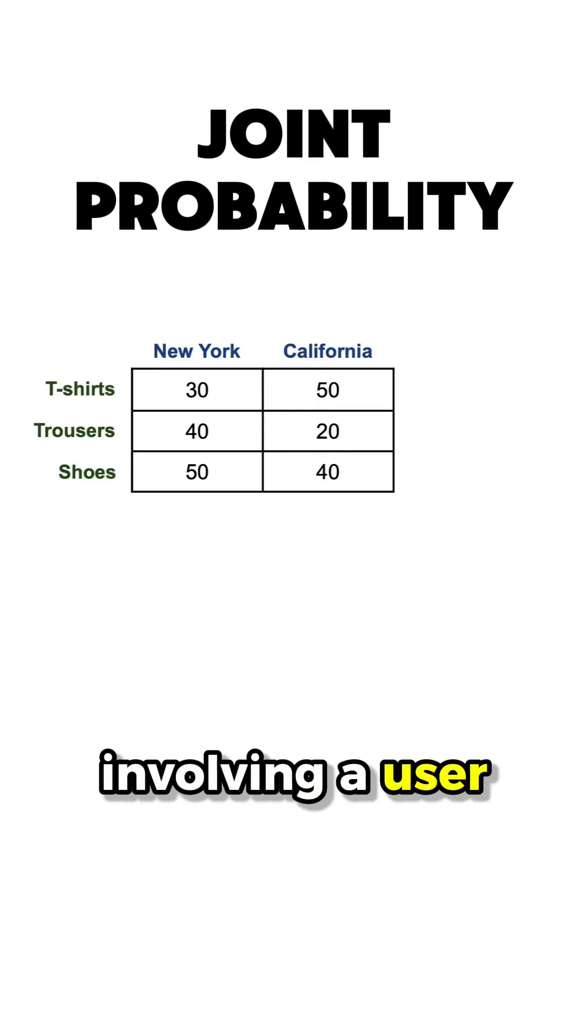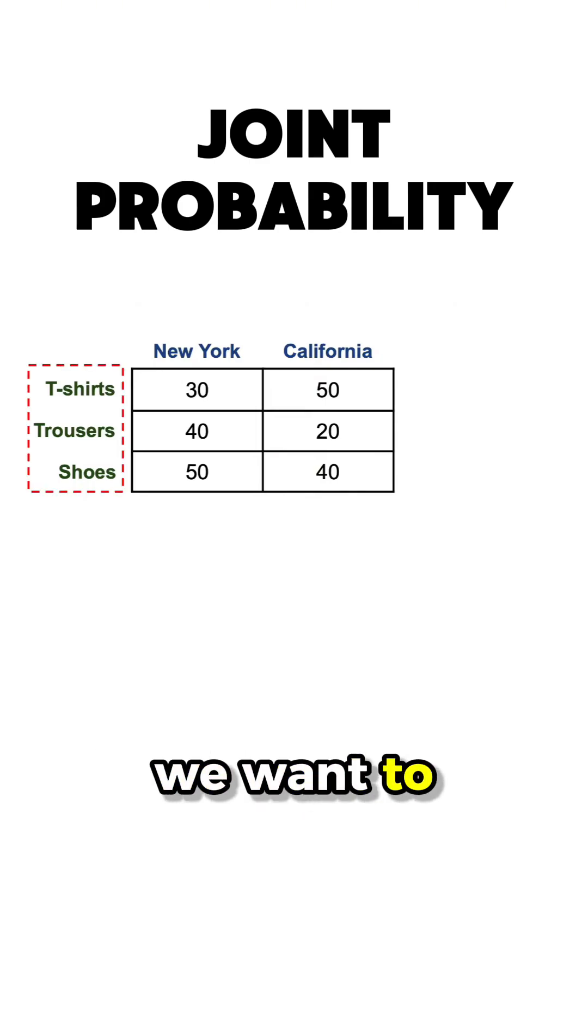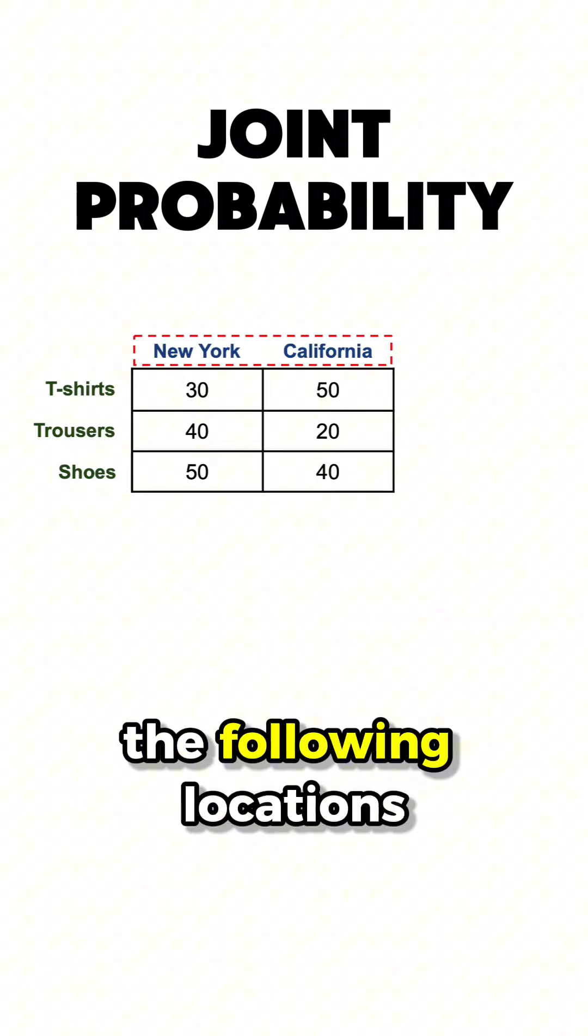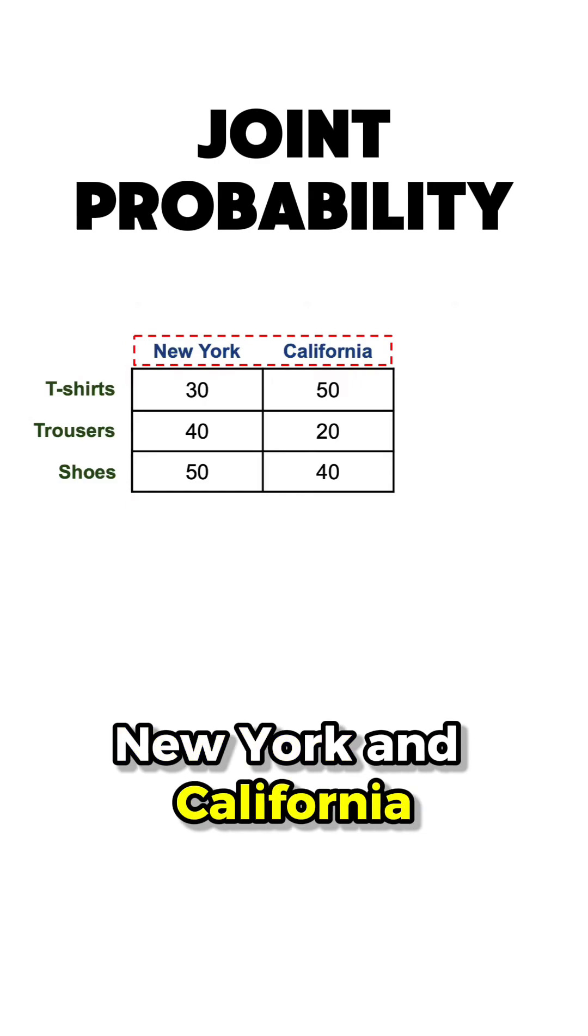A simple example involving a user database which contains some clothes our user bought and the location from where they bought them. For the sake of simplicity, let's say that we want to track only the following items which can be bought only from the following locations, New York and California.